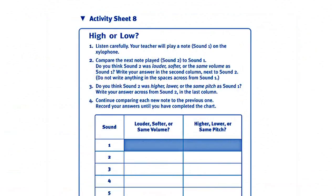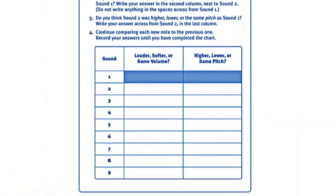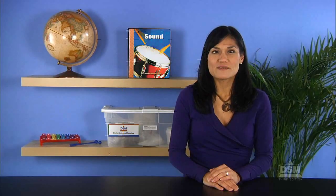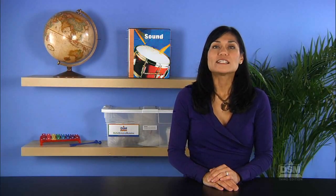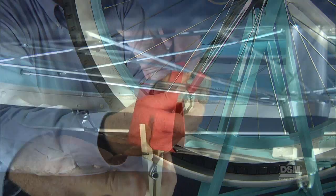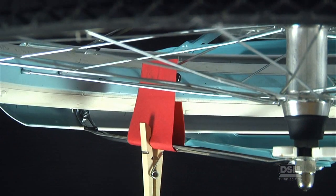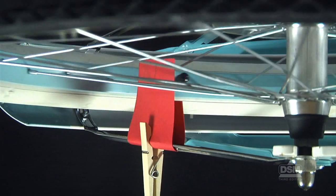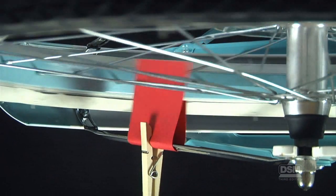To prepare for the activity, make a copy of Activity sheet 8 for each student. Bring a bicycle to class, turn it upside down, and attach the index card with the clothespin to the seat or the hub of the rear wheel, so that as you spin the wheel, the spokes hit the card and cause it to vibrate.